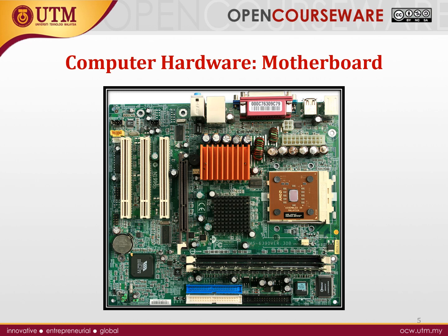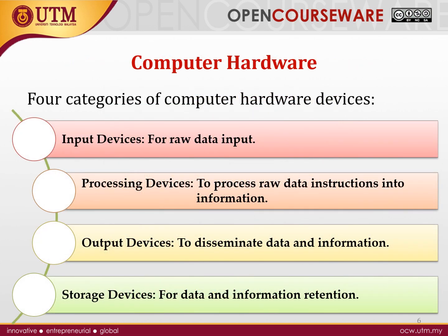We have four main categories of computer hardware devices: input devices, processing devices, output devices, and storage devices. Input devices are what we use to input raw data into our computers — for example mouse, keyboard, mic, and so on. But this data we input needs to be processed before we can see it, and that is the function of processing devices.